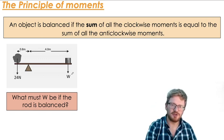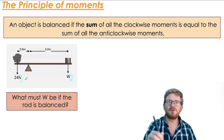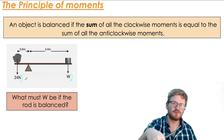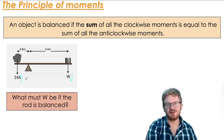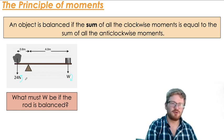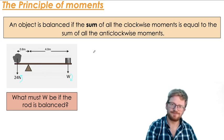And this 24 newtons, that's trying to turn it in an anticlockwise direction. Now you can see that both of them, both the forces are acting downwards, but because of where they are compared to the pivot, W is trying to turn it clockwise, whereas the 24 newton is trying to turn it anticlockwise. And I'm going to call this force one, and I'm going to call this force two.